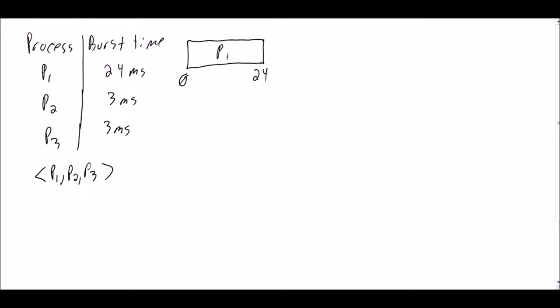And then now, we're going to go ahead and schedule process 2. So process 2 is scheduled right after process 1. Process 2 has a burst time of 3, putting us at time 27, because process 2 took 3 milliseconds.